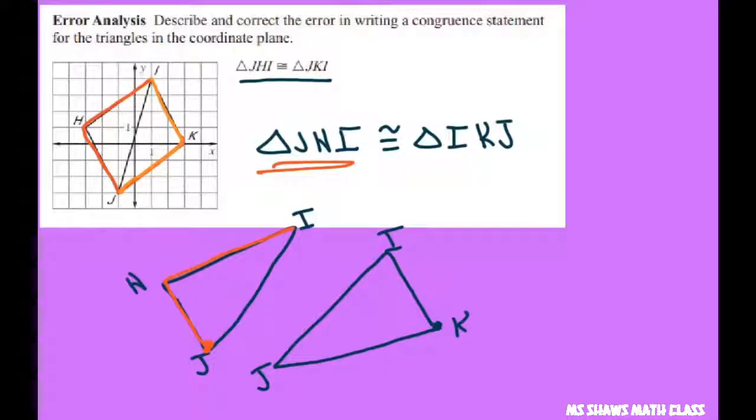...it should correspond to IKJ, leaving these two out of it in a way. So you have JI is congruent to IJ.